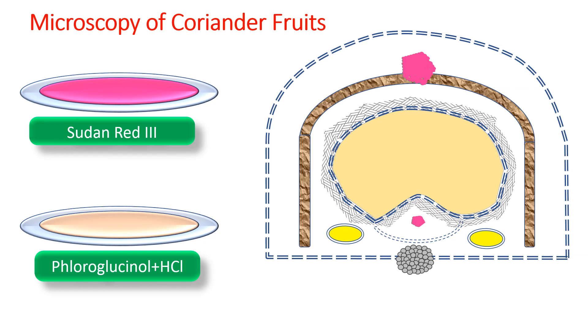Aleurone grains present in the endosperm region are also stained yellow by picric acid.